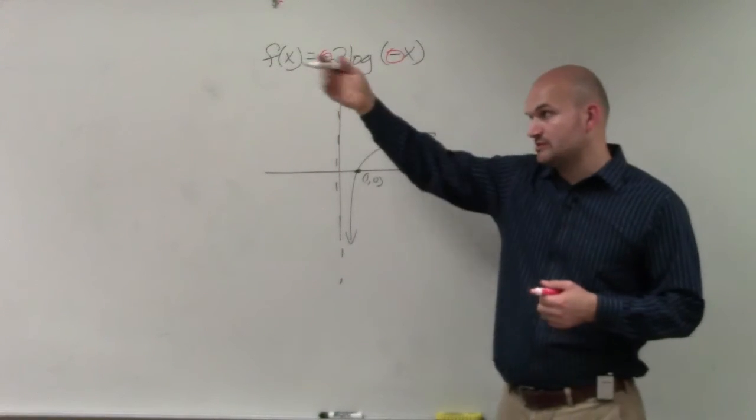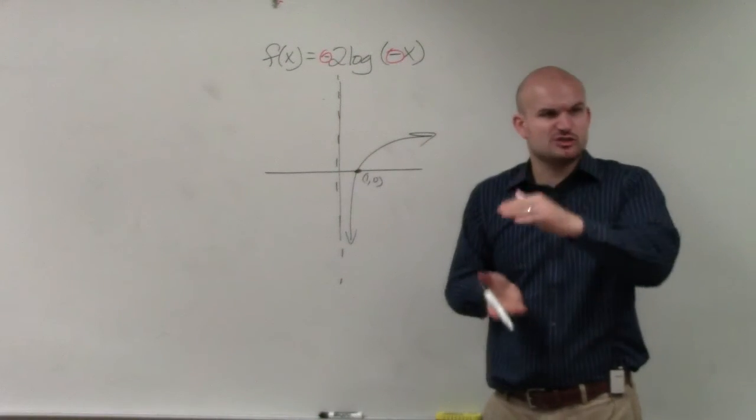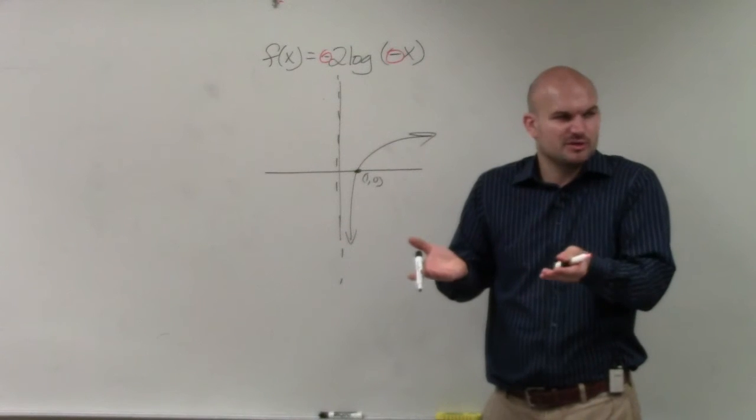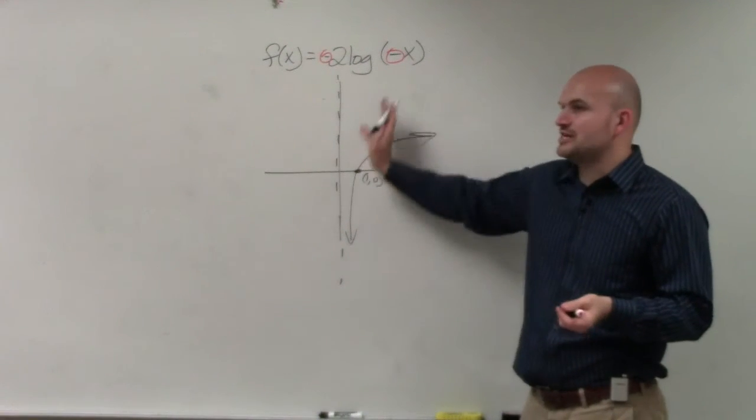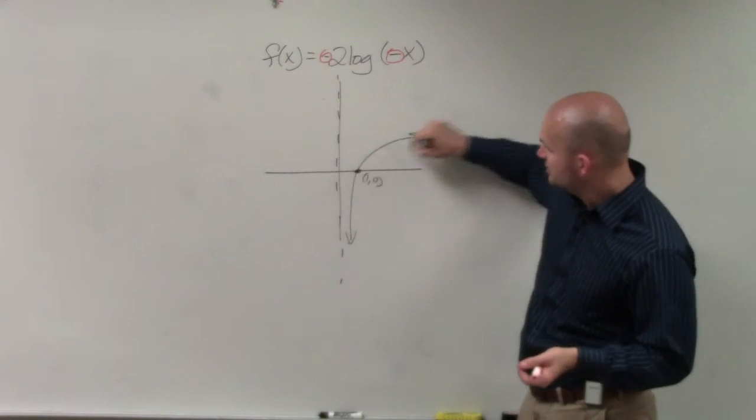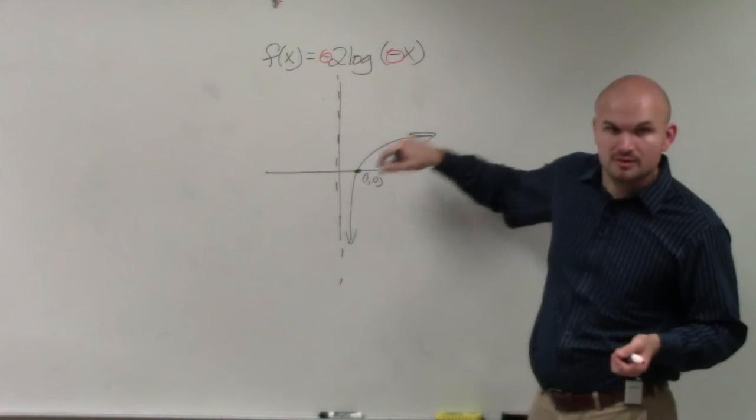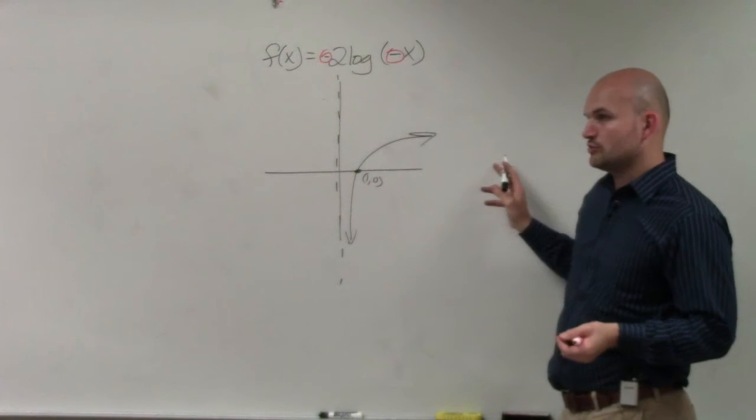The 2, if you guys remember when we looked at Desmos, all the 2 is going to do is vertically stretch the graph. That's all it really does. So that's not really going to be a transformation. It's more of a dilation. That's just kind of affecting the transformation. It actually makes it do a sharper turn on the graph. So it actually would go out a little bit shorter.